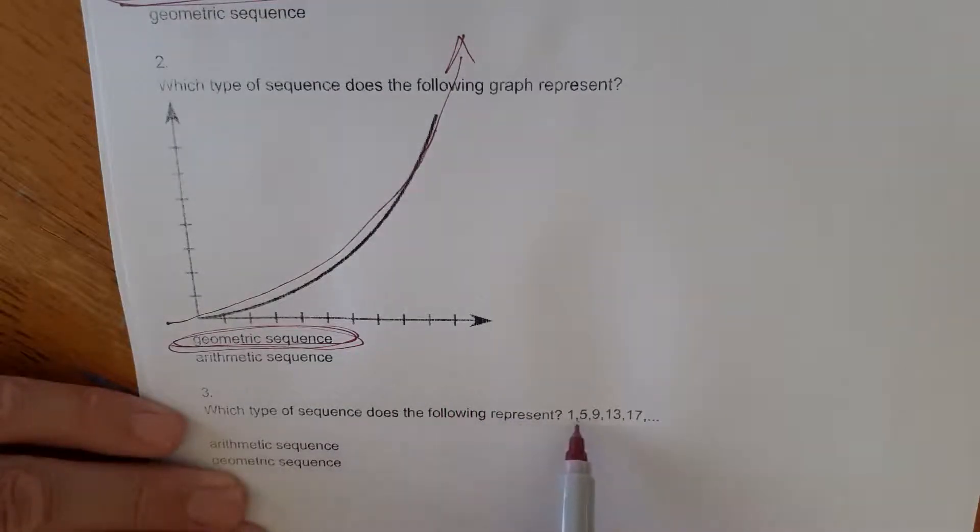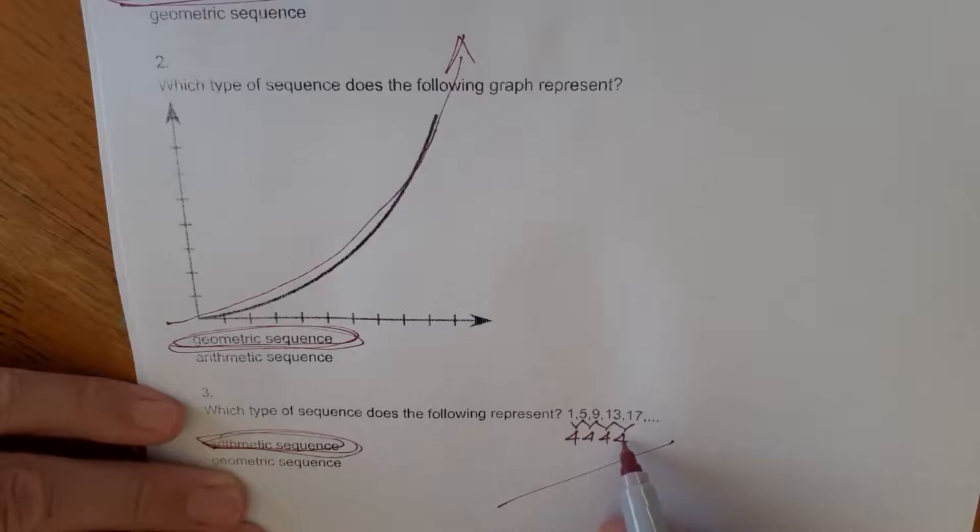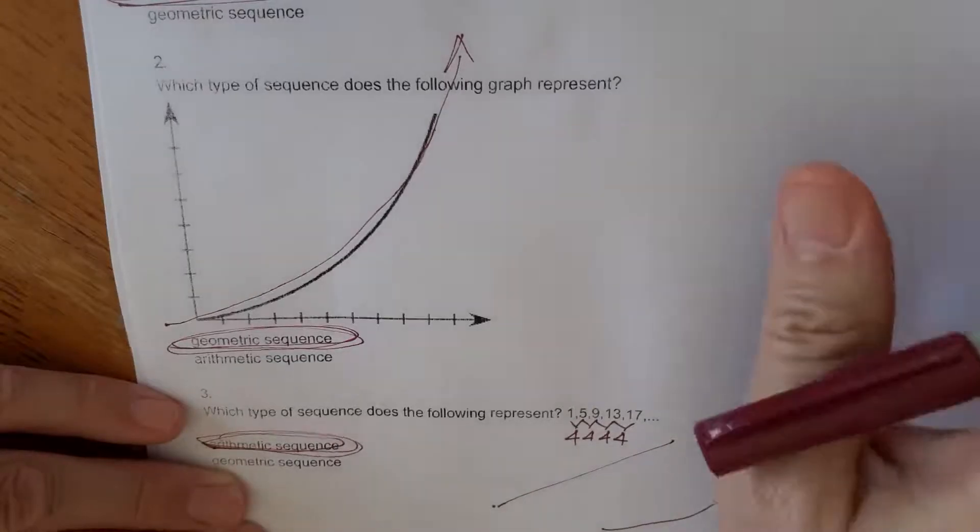Which type of sequence does the following represent? 1, 5, 9, 13, 17. Well, what's the difference between 1 and 5? 4. What's the difference between 5 and 9? 4. What's the difference between 9 and 13? 4. What's the difference? See, we notice that the change between each data point is exactly the same. This would be an arithmetic sequence. This is going to make a line when it graphs because there's nothing increasing. If we saw this going 4, 8, 16, 32, the difference between each data point, that would by nature have to increase at an accelerating rate, okay? And the basic difference between an arithmetic sequence and a geometric sequence.